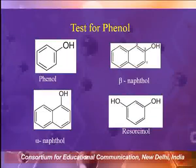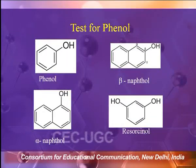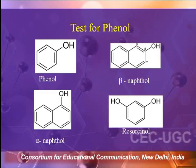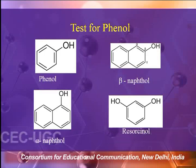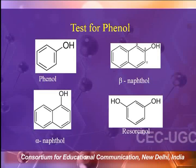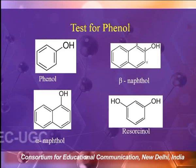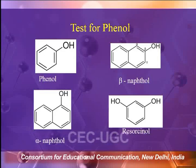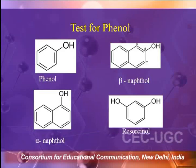Today I will start with the phenolic functional group. Phenolic compounds are organic compounds in which a hydroxyl group is directly linked to the benzene ring. You can see phenol, in which OH is directly linked to the benzene ring. In beta-naphthol, OH is linked to naphthalene at the beta position; in alpha-naphthol as well. You can also see resorcinol. All these compounds are examples of the phenolic functional group.